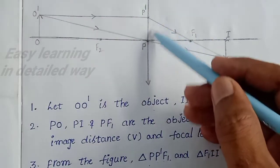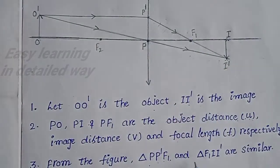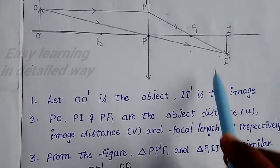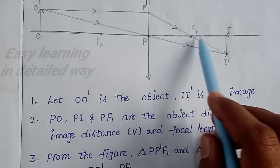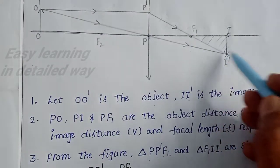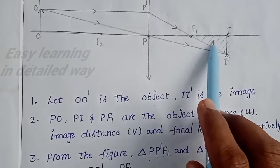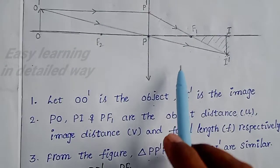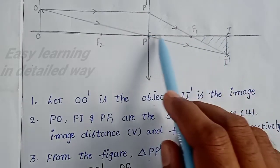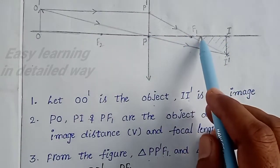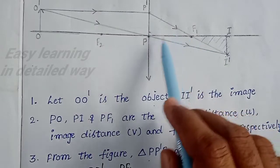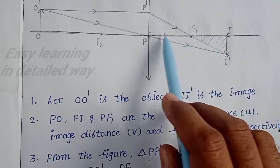This triangle and another triangle C-F1-I' — both are similar triangles. To prove this mathematically: in this part it is 90 degrees, and in the other part it is also 90 degrees, perpendicular to the principal axis. One of the angles is 90 degrees, and both these two angles are vertically opposite angles. So, with two angles equal in the two triangles, we can say these two are similar triangles.